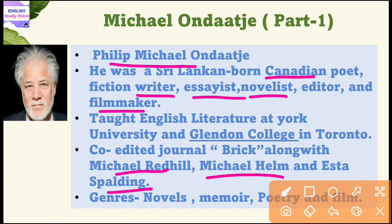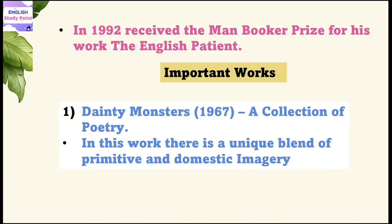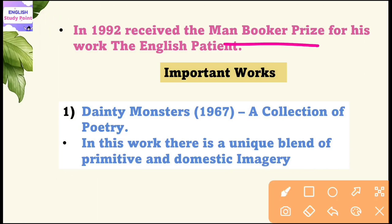The co-editors of Brick were named Michael Redhill, Michael Helm, and Linda Spalding. He used to write in so many genres — he is best known as a novelist but also wrote memoir, poetry, and film. In 1992 he received the Man Booker Prize for his work The English Patient, which was also adapted into an award-winning film.